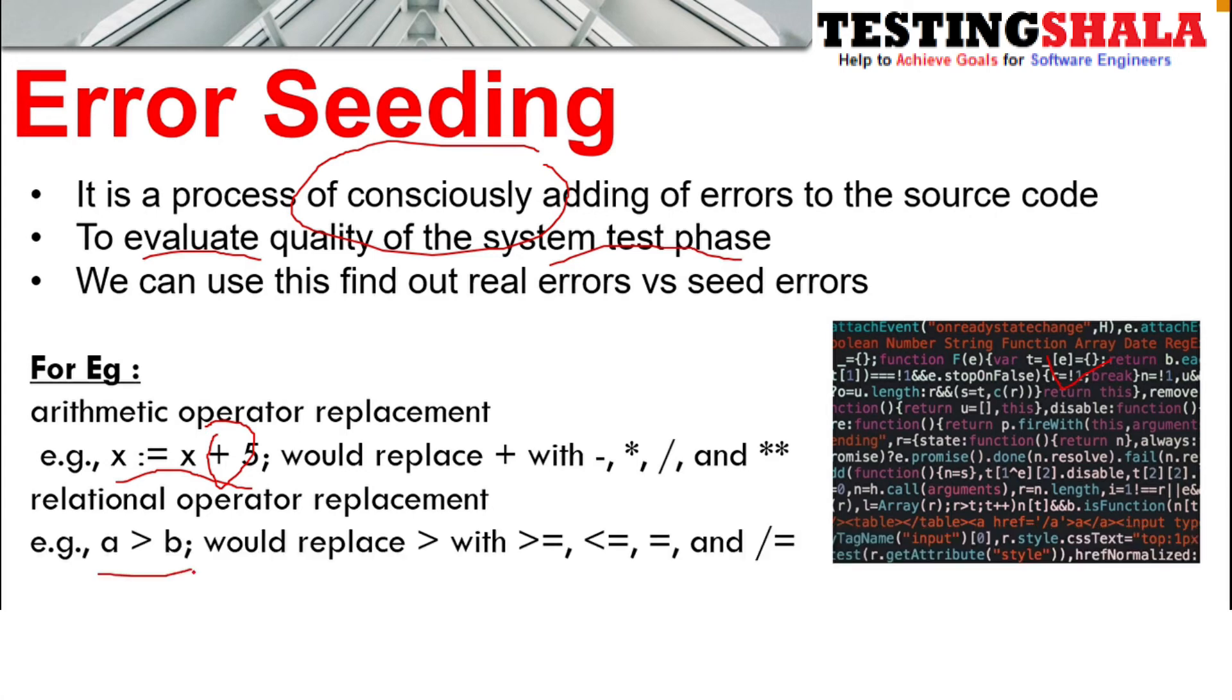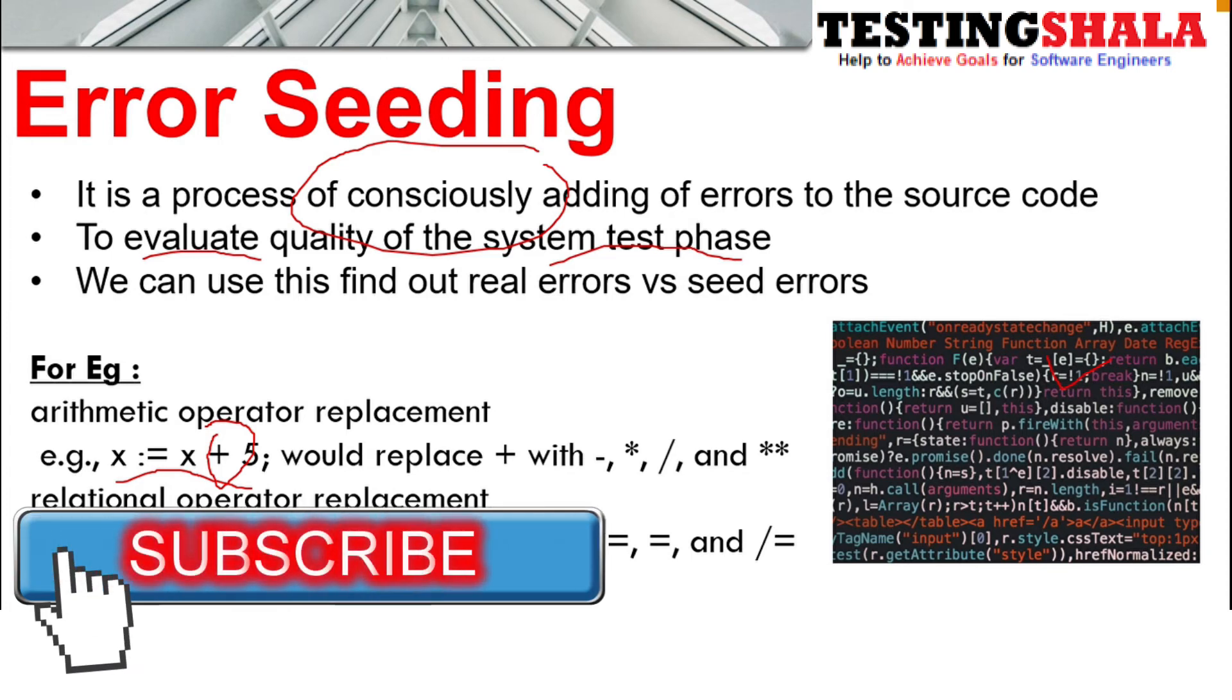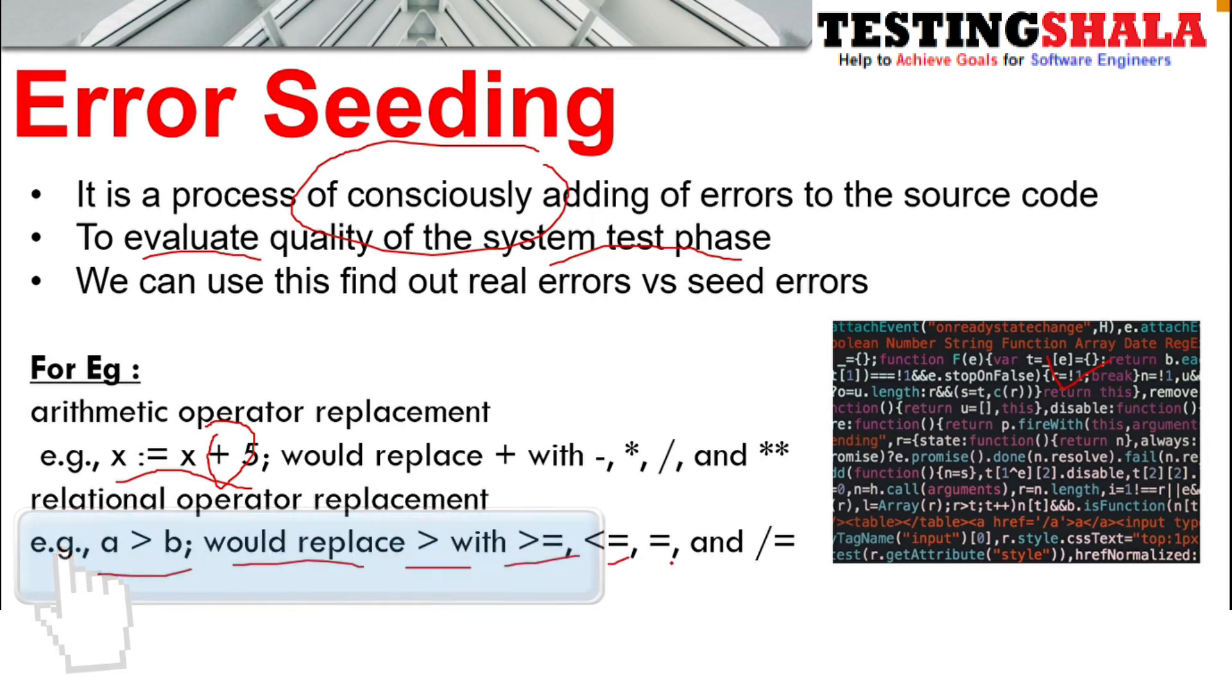Taking another example, if in the actual code based on the requirement, it should be a greater than b. In case the developer consciously replaces greater than with greater than or equal, less than or equal, equal, or something like this.